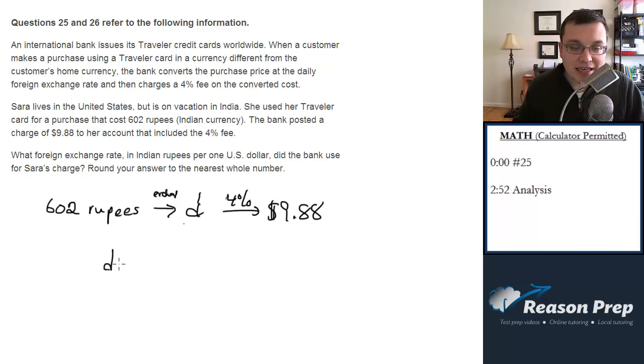So this D with 4% added onto it is going to get us $9.88. Remember, to increase D by 4%, you multiply it by 1 plus the percent. In other words, 1 plus the rate as a decimal, so in this case, 1 plus 0.04. So we're going to multiply this by 1.04.